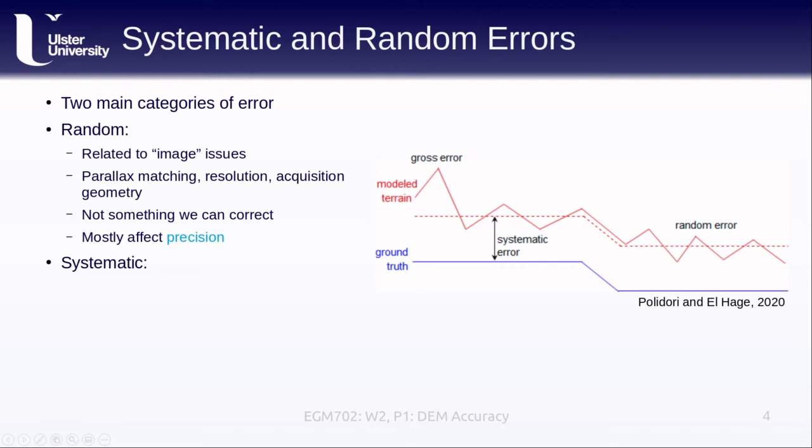We also have systematic errors. These are errors that are also called bias. This is where we have our values somehow shifted in a universal or maybe more local way away from our ground truth or our actual elevation data. These are more related to the external orientation of our images or our sensors. These are things that we can also model and correct, because they are based on some physical aspect of the system that we can work with. These also mostly affect the accuracy.